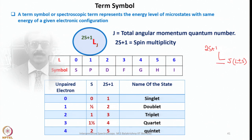L can range from 0 to N. When L equals 0 the term symbol letter is S; when L equals 1 it is P; when L equals 2 it is D; when L equals 3 it is F; when L equals 4 it is G; when L equals 5 it is H; and when L equals 6 it is I. All of these are capital letters.